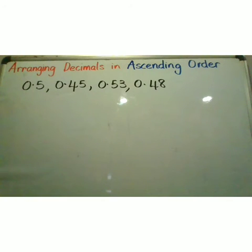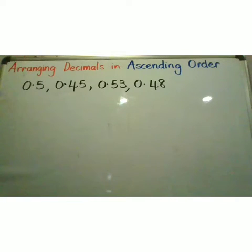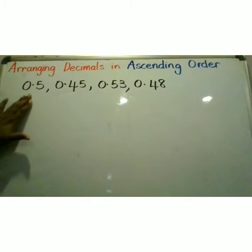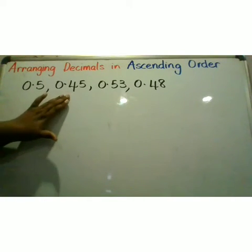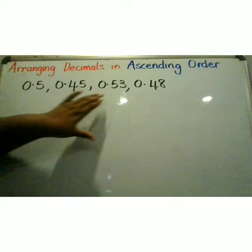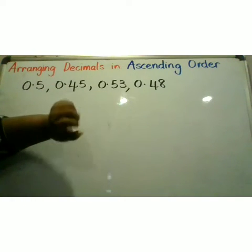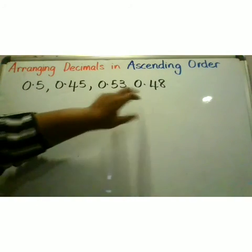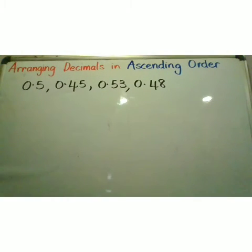In this video, we are arranging decimals in ascending order, meaning we are putting them from smallest to largest. We have 0.5, 0.45, 0.53 and 0.48.